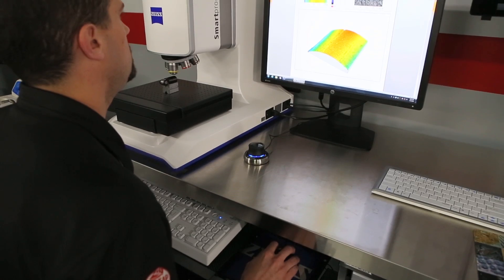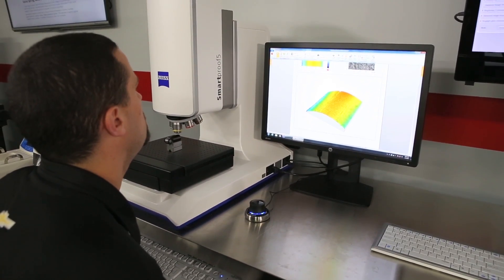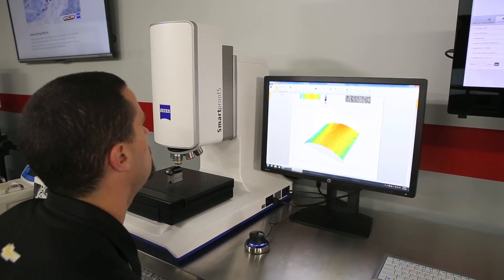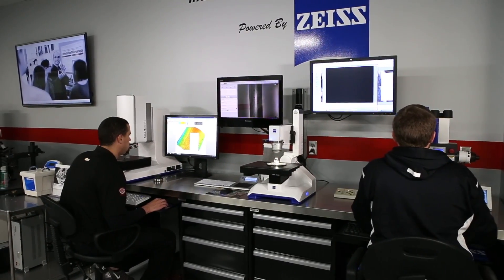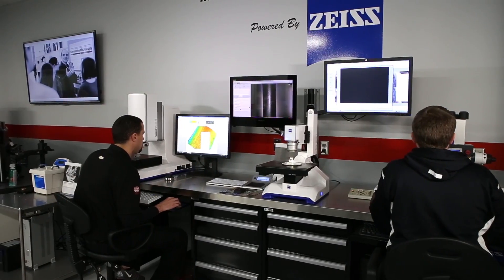The SmartProof 5 is a new confocal microscope recently released by Zeiss, and we're very excited to be able to use it. It's used primarily for 3D surface finish and texture analysis. We found very good correlation between it and our Surfcom Next for surface finish.